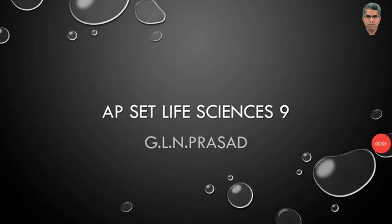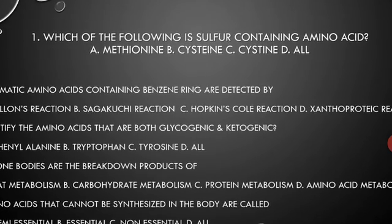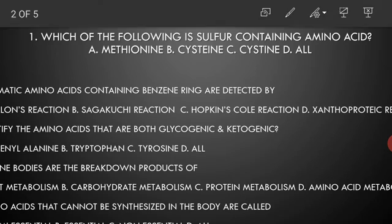Welcome to APSET Life Sciences 9th Platform. Which of the following is a sulfur-containing amino acid? Methionine, Cysteine, and Cystine. The answer is all of the above.